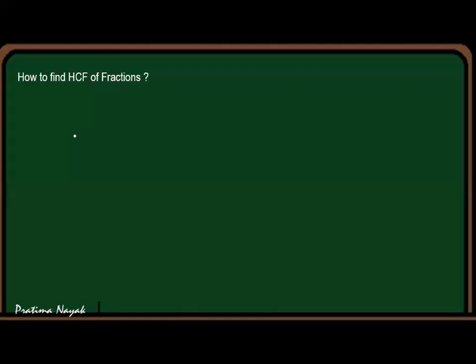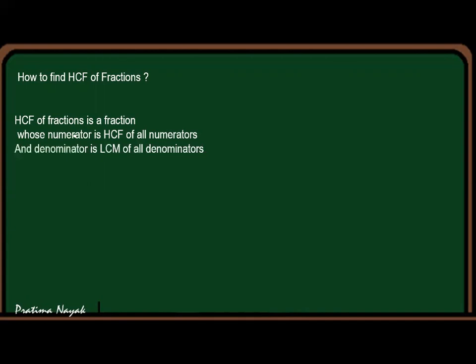First, we are going for HCF. HCF of a fraction is a fraction whose numerator is HCF of all numerators whose HCF we have to find out, and denominator is LCM of all denominators of given fractions. So this is the formula: HCF of fractions is HCF of all numerators and LCM of all denominators.